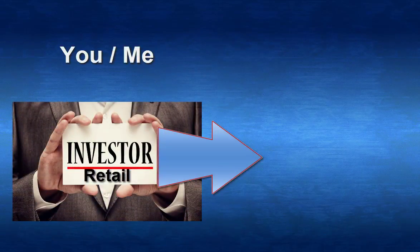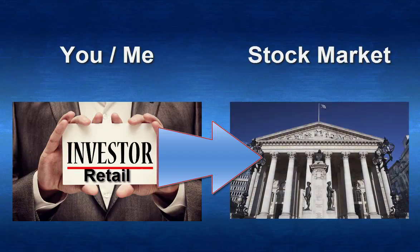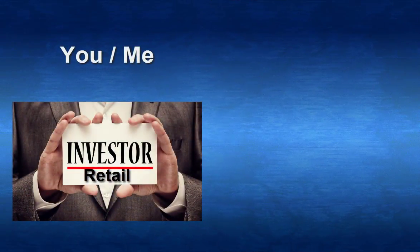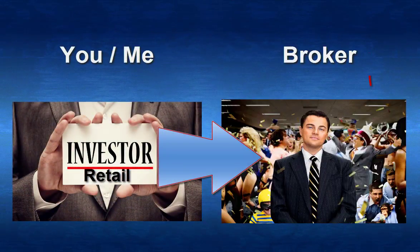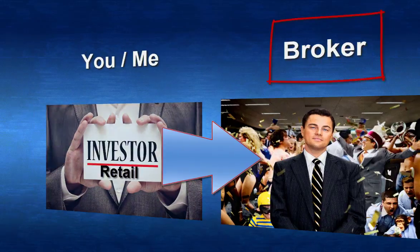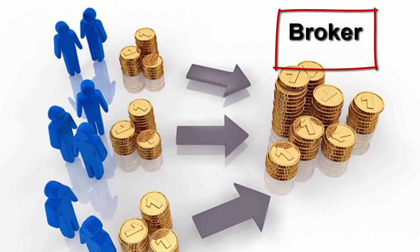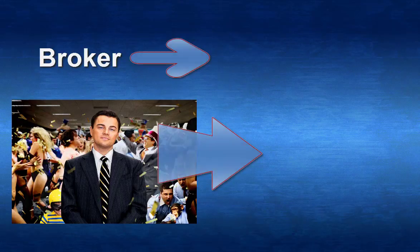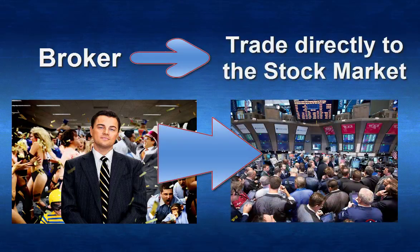Here is the structure of all the actors of the stock market. To be able to invest or trade directly into the stock exchange, we need a big amount of money, which makes it very difficult for us retail traders. To be able to trade, we need to go through a broker. This broker will accumulate money from a lot of different retail traders and medium or small banks, and then they will process the trade to the stock exchange for us in real time.